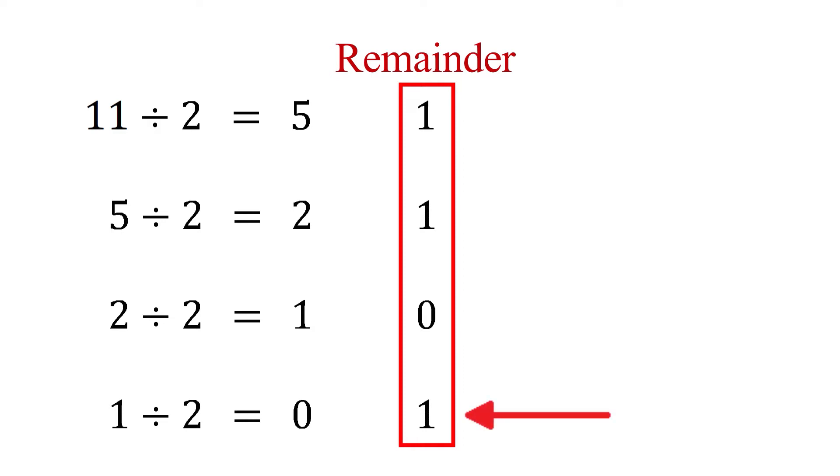Getting back to our repeated division method of finding binary numbers, the last remainder we found when we divided 1 by 2 is the most significant bit in the binary number. This is why we wrote it first. The first remainder we got when we divided 11 by 2 is the least significant bit. This is important because when we switch over to the decimal side of the decimal number, this switches on us.